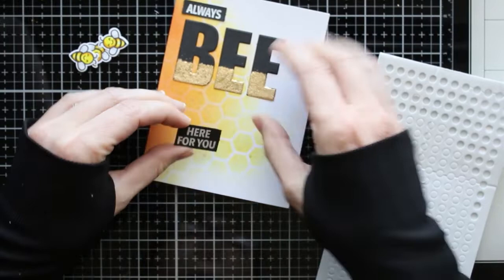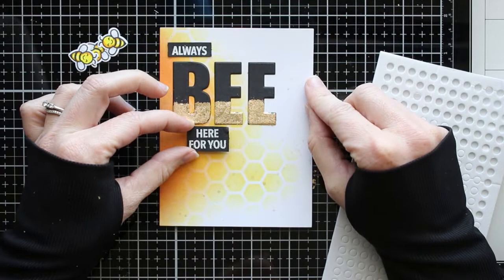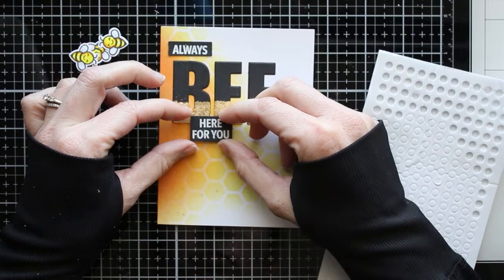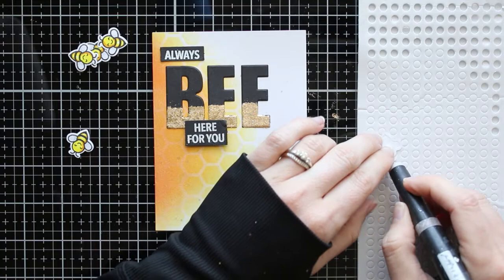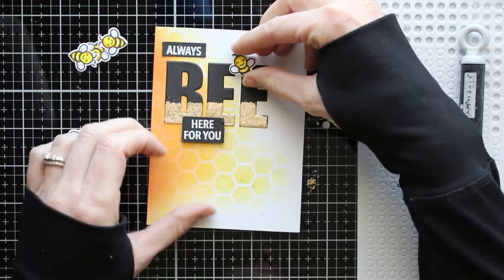And then the rest of the sentiment I'm popping up with some foam circles. Now these are scrapbook.com foam circles. I really love that they have different shapes and sizes of adhesive so that you can use them with whatever project you're doing. After I've got my sentiment all done I'm going to start adding my bees and I really loved this adhesive. I picked these little circles for this reason that I can add one little circle of foam behind each bee and pop them up.